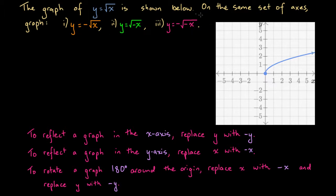Before we construct any table of values, let's predict what the graphs will look like based on these definitions. For the first function in orange, y equals minus square root of x — if we multiply both sides by minus 1, we get minus y equals the square root of x. All we've done is replace y with minus y, and the rule says that replacing y with minus y reflects the graph in the x-axis. So we're predicting that this orange graph will be the same as the blue graph, just reflected in the x-axis.